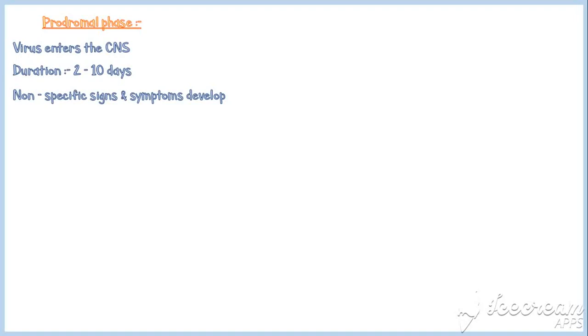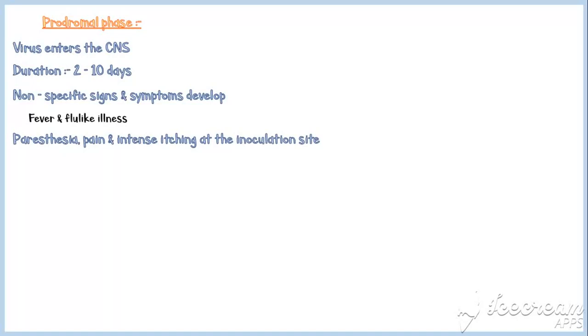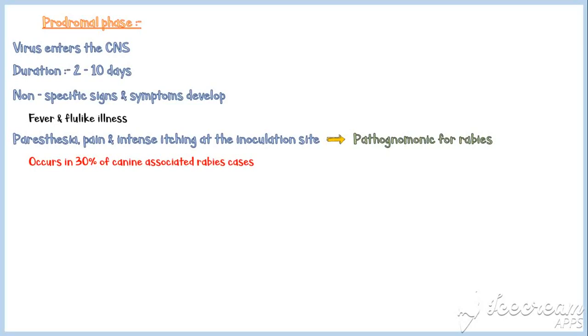The clinical course of rabies can be divided into two phases: prodromal phase and acute neurologic phase. The prodromal phase starts as the virus enters the central nervous system, with an average duration of 2 to 10 days. During this phase, nonspecific signs and symptoms start to appear, like fever and flu-like illness. Paresthesia, pain, and intense itching at the inoculation site is pathognomonic for rabies, occurring in 30% of canine-associated rabies and 70% of bat-associated rabies cases.